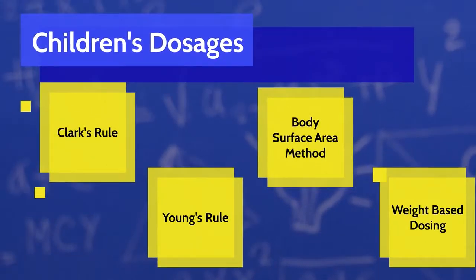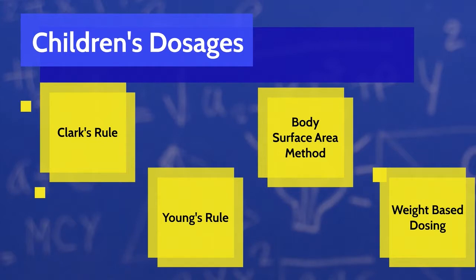Before we finish, here are a few helpful hints. Always check your units in both the question and the answer to ensure you're solving the equation appropriately. If the question gives units in grams but the answers are in milligrams, convert by multiplying grams by 1,000 before solving. You saw this in the weight-based dosing exercise where pounds had to be converted to kilograms. Always double-check your units to ensure you solve the problem correctly.